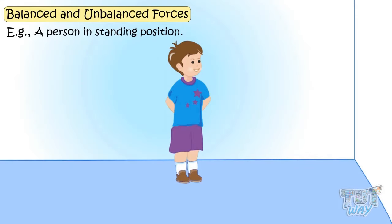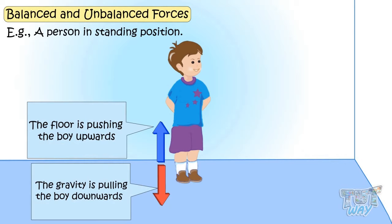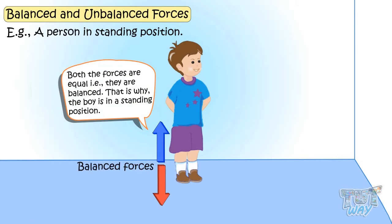If a boy is standing, there are two forces acting on him. The floor is pushing the boy upwards and the gravity is pulling the boy downwards. Both forces are equal, they are balanced. So that is why the boy is in the standing position.